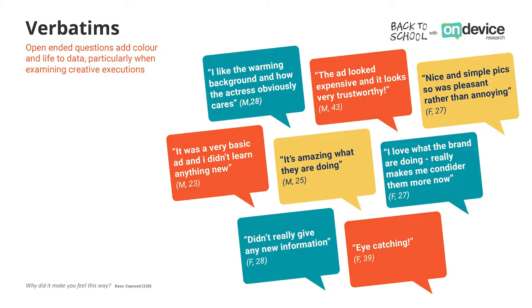This is followed by a verbatim analysis where we ask respondents why they feel a certain way. We can look at the verbatims to add some colour as to why they felt the specific emotion they did towards the campaign. We can also look at top message takeout — which messages are best communicated by the creative — and assess what percentage of respondents exposed felt there was no clear message communicated by the campaign.